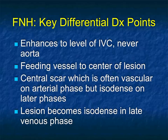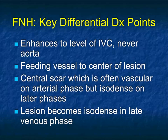Key differential diagnosis points for FNH: it enhances to the level of the IVC, never to the aorta; feeding vessels go to the center of the lesion; there's a central scar which is often vascular on arterial phase but isodense on later phase imaging; and the lesion becomes isodense on venous phase.